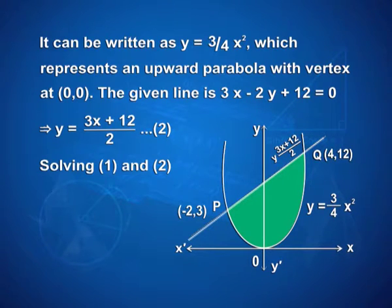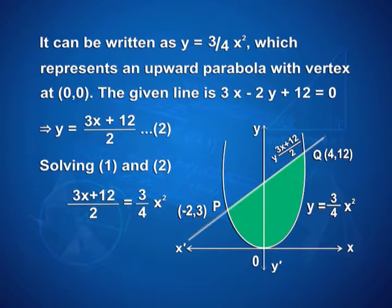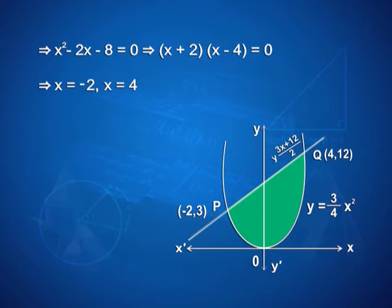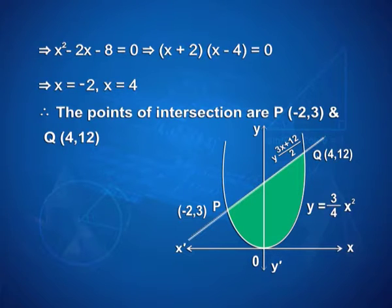On solving equations 1 and 2, we get (3x + 12)/2 = (3/4)x², which implies 6x + 24 = 3x², giving x² − 2x − 8 = 0. This can be factorized as (x + 2)(x − 4) = 0, so x = −2 and x = 4. Therefore, the points of intersection are P(−2, 3) and Q(4, 12).